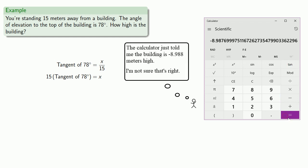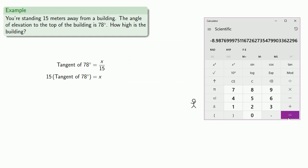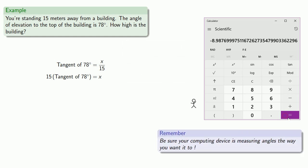Now you should be a little suspicious of a negative answer here. And again, it's important to make sure your calculator is measuring angles the same way you are. Here our angle is measured in degrees, but our calculator is measuring angles in radians. So we'll need to switch that.